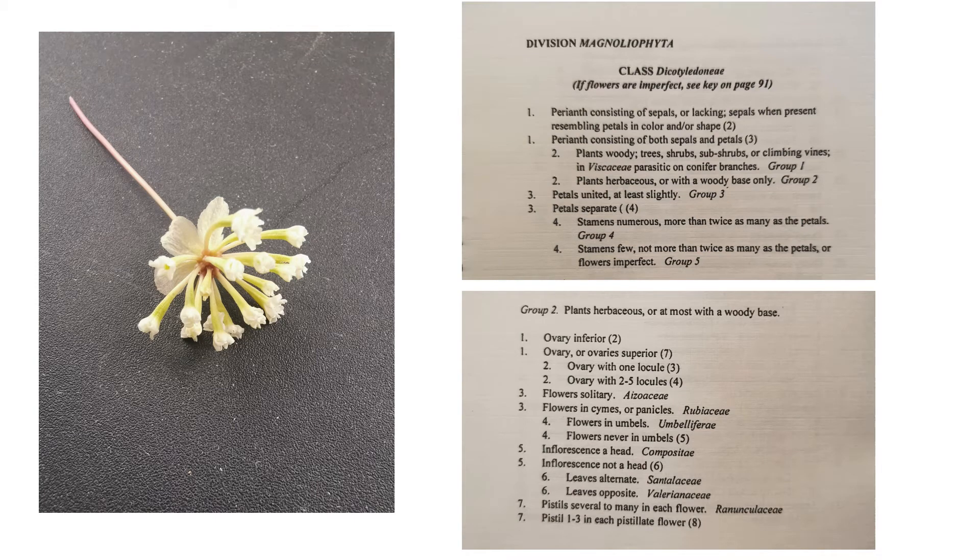Okay, welcome to this next keying video. We're starting right here in Magnolia and we're going to just dig right into it. So one says perianth consisting of sepals or lacking, sepals when present resembling petals in color and shape. If we look at these individual flowers, this area right here, we don't see, we're either lacking sepals or they resemble petals in color and shape. So we're going to move to two and I've left some of the stem here and we can see that this is not woody or at least the base was only woody. You can see a lot of herbaceous parts of the plant here. So we're going to go on to group two.